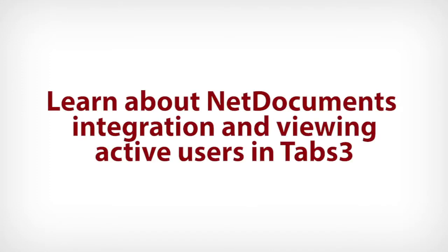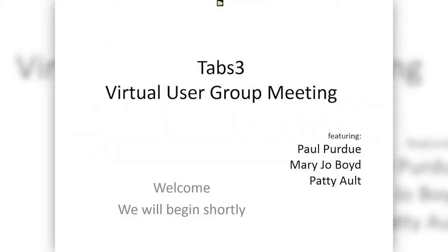Good afternoon everyone, my name is Paul and I am a nerd. What month is it? October — you'd think I'd know that. It's cold, it's going to snow next weekend, and there's people dressing up like all sorts of things. You're lucky enough to be here for the October 2019 Tabs3 virtual user group from Attorney Computer Systems.